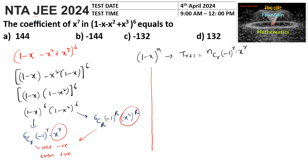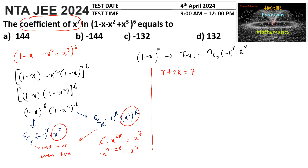To get the coefficient of x^7, x^r times x^(2R) must equal x^7, so r plus 2R equals 7. Since 2R is even, r must be odd to produce the odd number 7. So let us choose r equals 1, which means capital R must be 3.